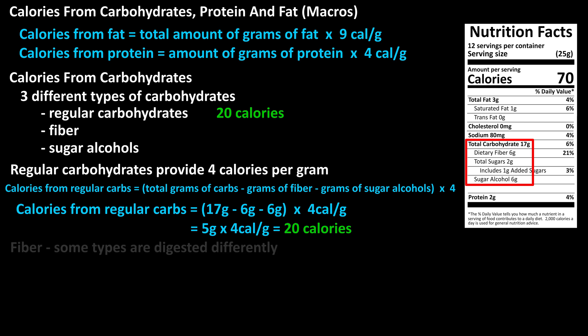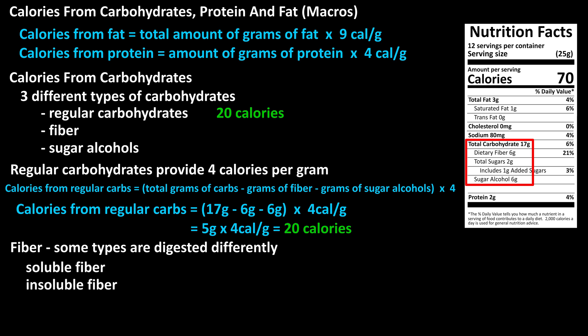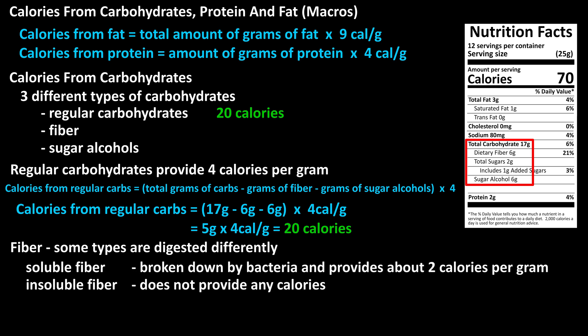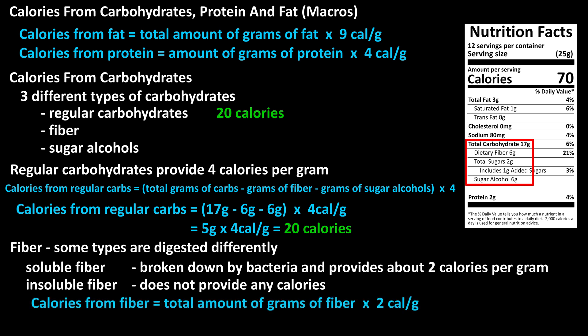Now for fiber. Fiber is a type of carbohydrate that is not digestible in the way other carbohydrates are digested. There are two types of fiber: soluble fiber and insoluble fiber. Insoluble fiber does not provide any calories. However, soluble fiber is broken down by bacteria in the large intestine and does provide some calories — about two calories per gram. In most cases on nutrition labels, the total amount of fiber is listed, not the amount of soluble fiber, so it's usually a good idea to assign two calories per gram of fiber to be safe. On our example label, it lists fiber at six grams, so six grams times two calories per gram equals 12 calories from fiber.